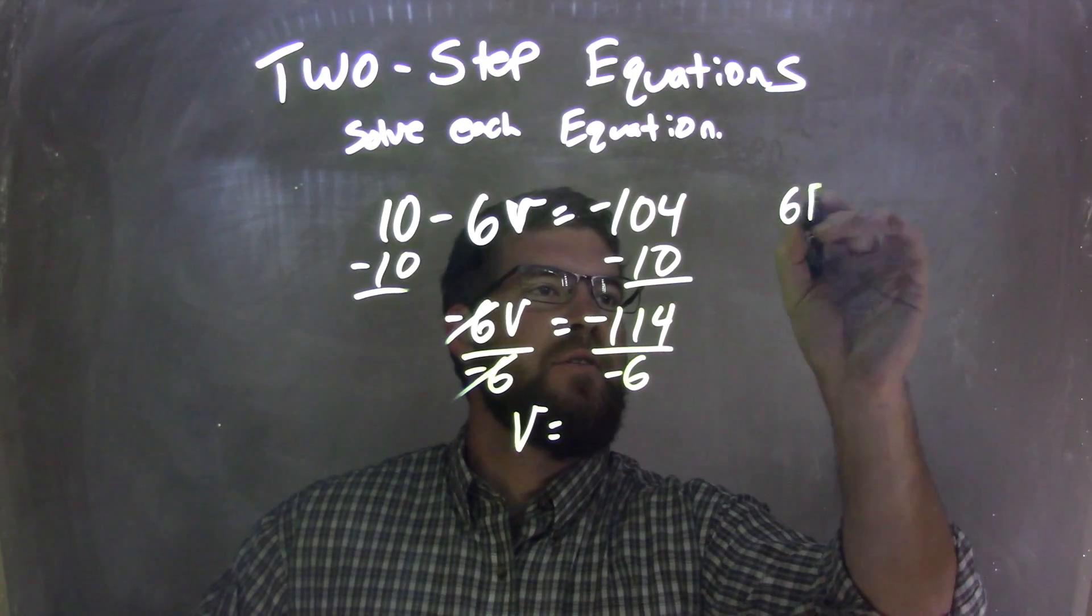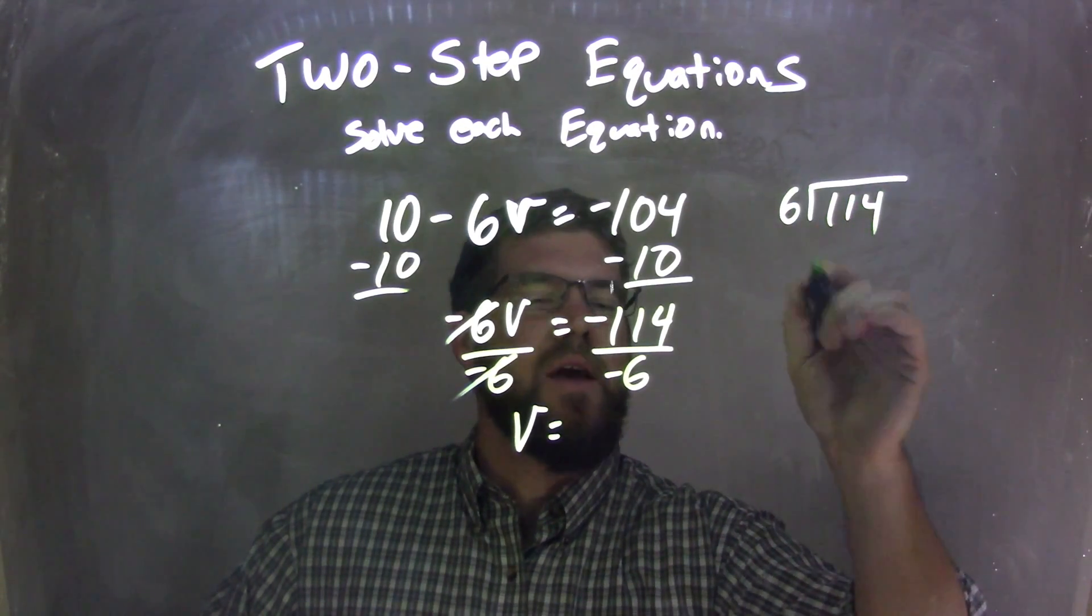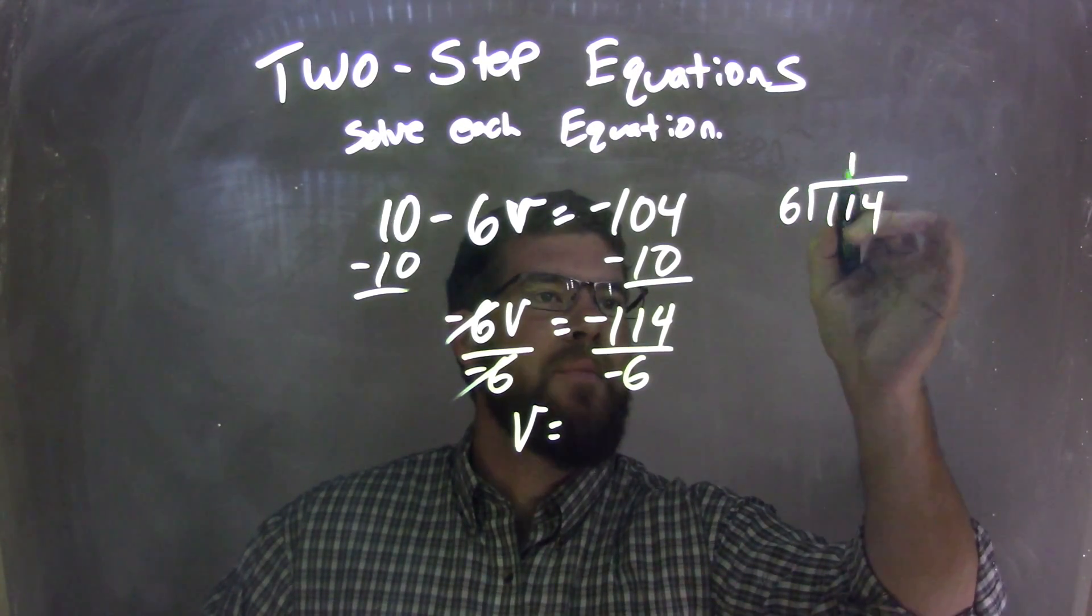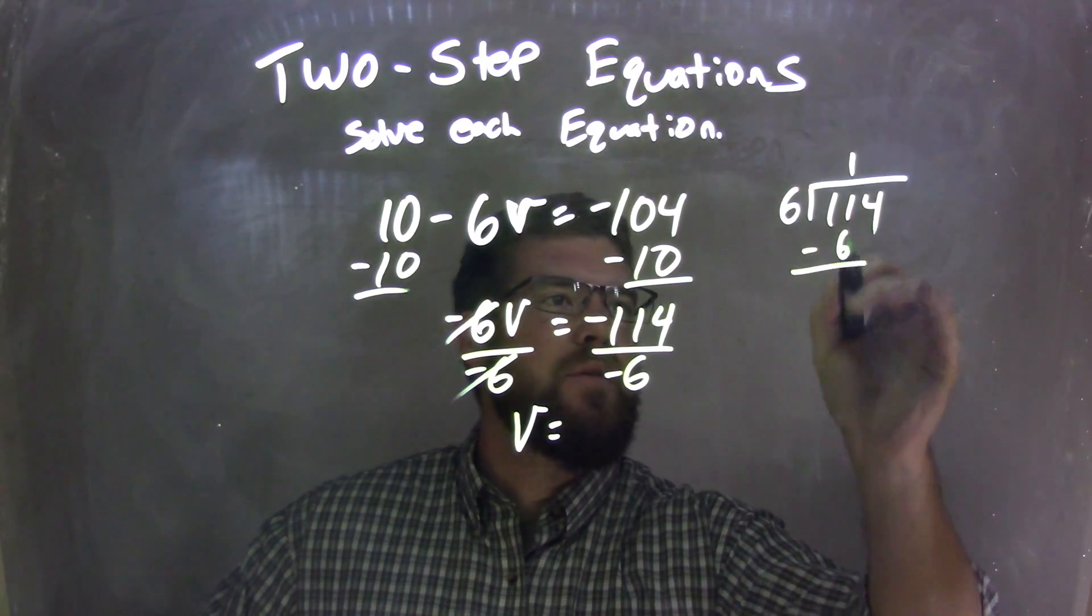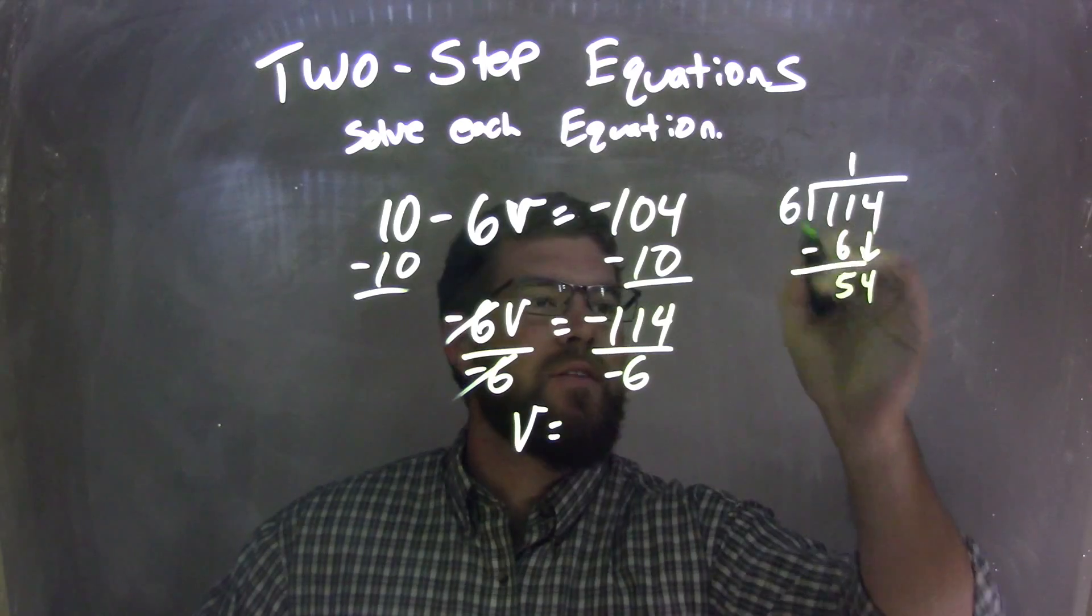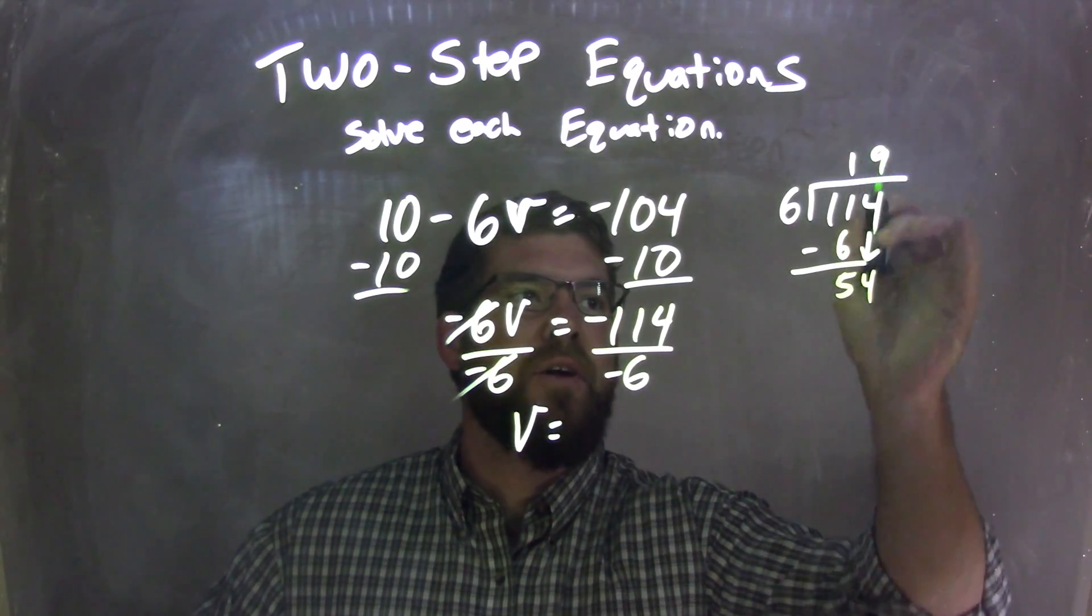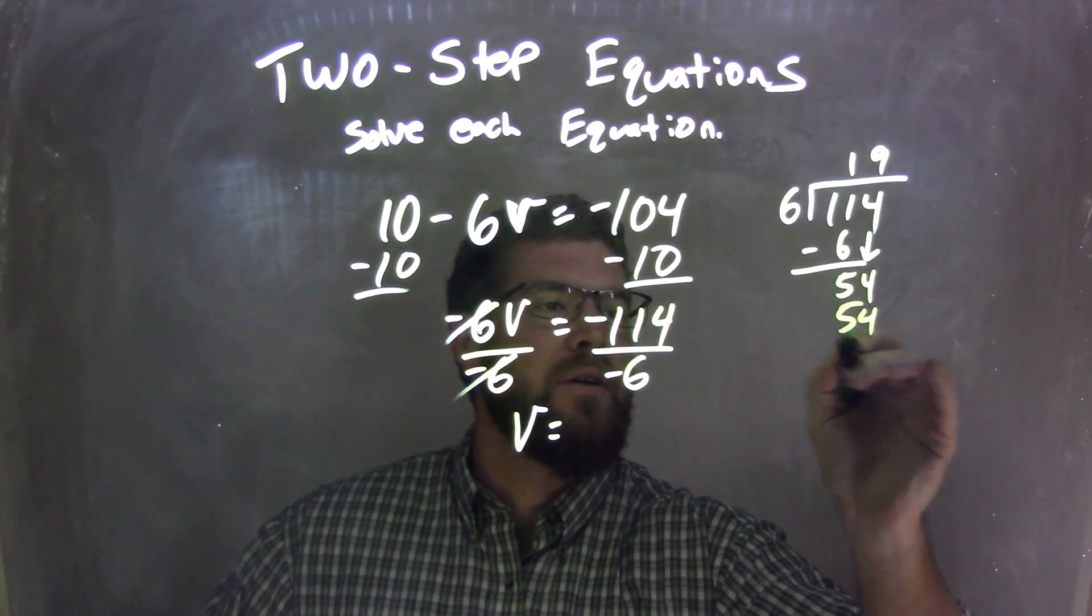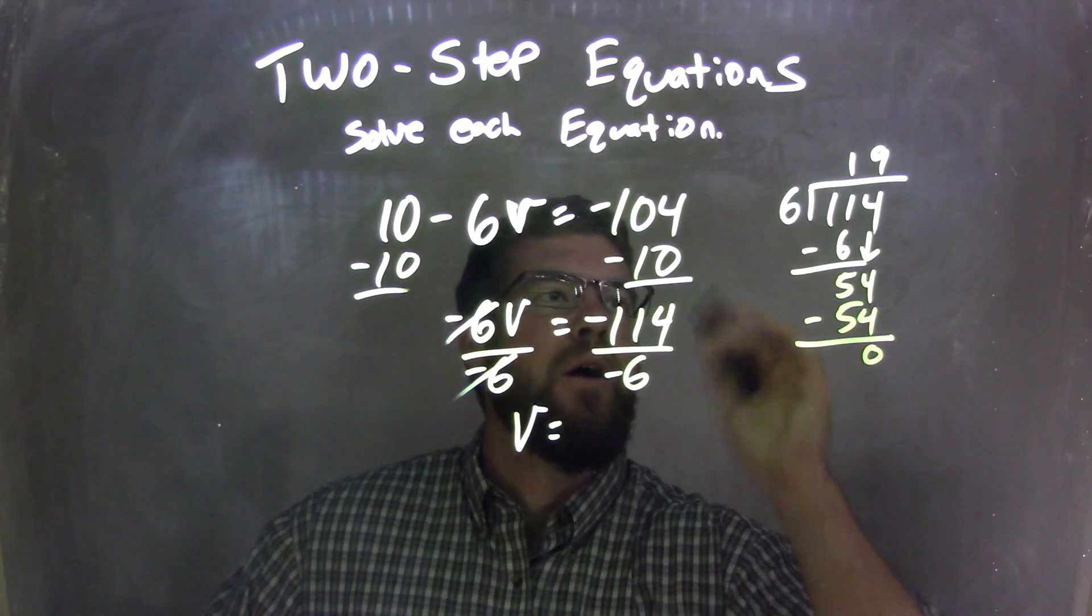Let's go 6 goes into 114 here. 6 goes into 11, 1 time, and 1 times 6 is 6. We subtract it and get a 5. We bring down the 4. 6 goes into 54, 9 times, right, because 9 times 6 is 54. We subtract it, 0, we're done.